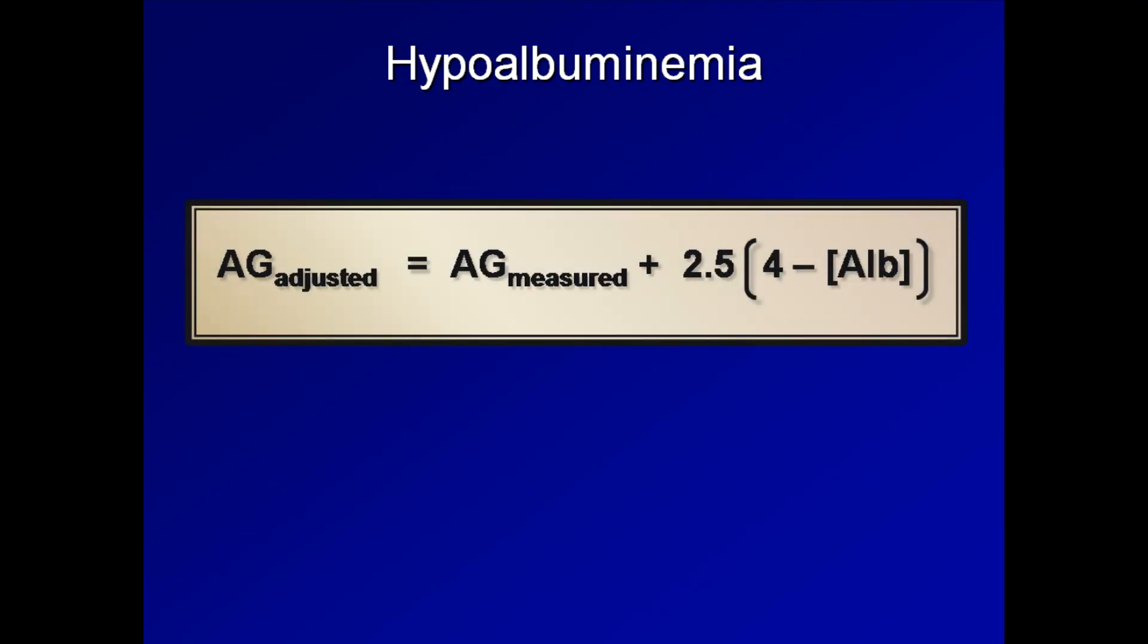As hypoalbuminemia is the most common cause of a low anion gap, a formula has been empirically developed in an attempt to adjust the anion gap to account for it. The equation for this is as follows. The adjusted anion gap in milliequivalents per liter equals the measured anion gap plus 2.5 times 4 minus the albumin as measured in grams per deciliter. The reason to adjust for hypoalbuminemia is to prevent missing mild anion gaps. For example, a patient found to have an anion gap of 14 might not initially alarm a treating physician. However, if that patient was found to have an albumin of 1.5, the expected anion gap would no longer be 12 milliequivalents per liter, but rather 6. Thus, instead of the patient's anion gap of 14 being 2 higher than the upper limit of normal, it is actually 8 higher than what would be expected, which would be more concerning.